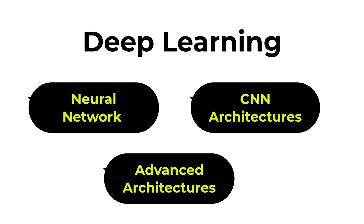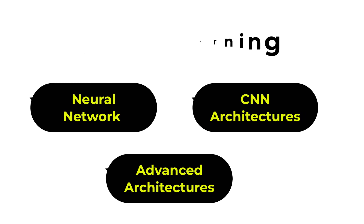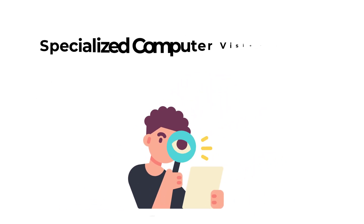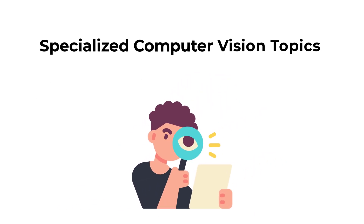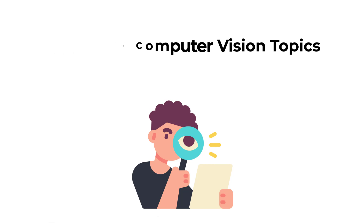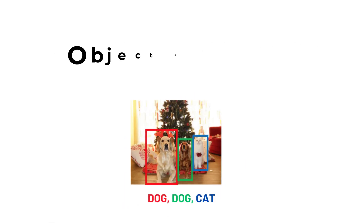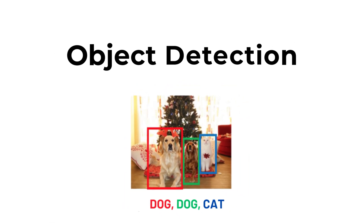The next skill is a deep dive into computer vision topics. There are many computer vision techniques you can leverage. For example, let's assume you want to perform an object detection task — your goal is to identify objects in images and videos.